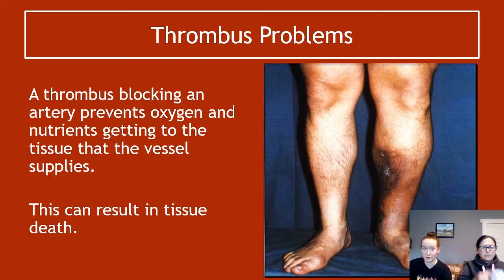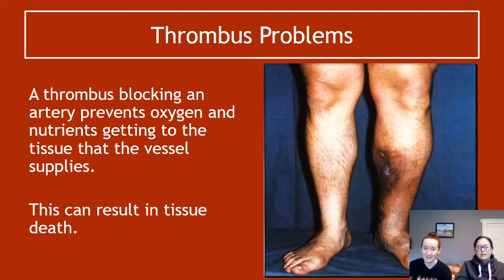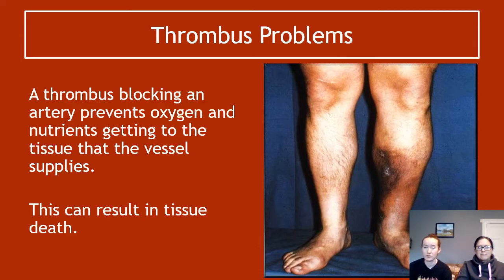Thrombuses obviously lead to more severe problems. When a thrombus is blocking an artery it prevents oxygen and nutrients from getting through — things that are vital for your survival. Any tissue or organ needing these important substances cannot get them, which can result in tissue or organ death. In this picture you can see black tissue in a leg — tissue death caused by a thrombus blocking the blood vessel supplying that area.